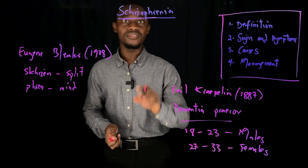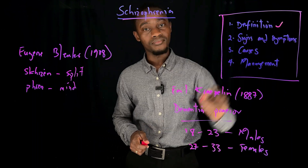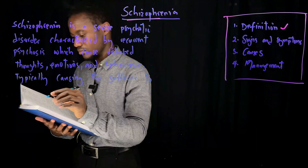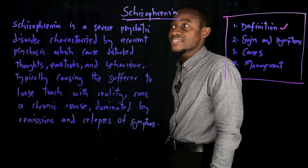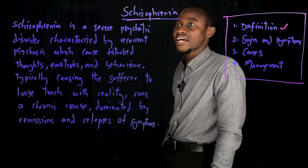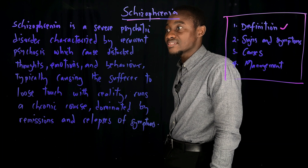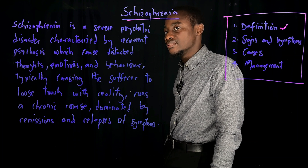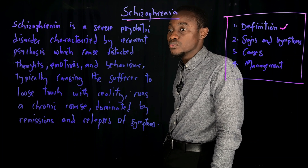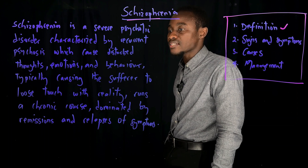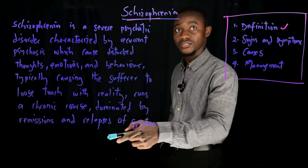Now that we know how the term Schizophrenia came about, let's move on to the definition. Schizophrenia is a severe psychotic disorder characterized by recurrent psychosis, which causes disturbed thoughts, emotions and behavior, typically causing the sufferer to lose touch with reality. It runs a chronic course dominated by remissions and relapses of symptoms.